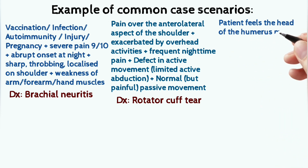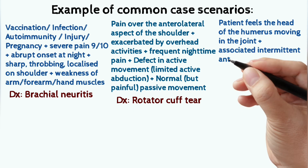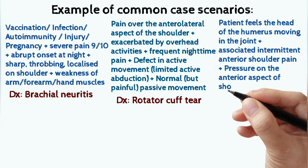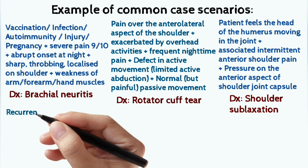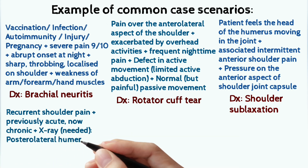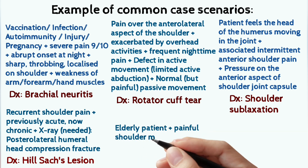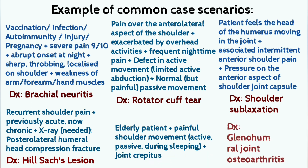Patient feels the head of the humerus moving in the joint capsule, with associated intermittent anterior shoulder pain and pressure on the anterior aspect of the shoulder — it is shoulder subluxation. If a patient has recurrent shoulder pain, previously acute but now chronic, and x-ray showing a posterolateral humeral head compression fracture — the diagnosis is Hill-Sachs lesion. When an elderly patient presents with painful shoulder movement (active, passive, during sleep, or at any time) with joint crepitus — diagnosis is glenohumeral joint osteoarthritis.